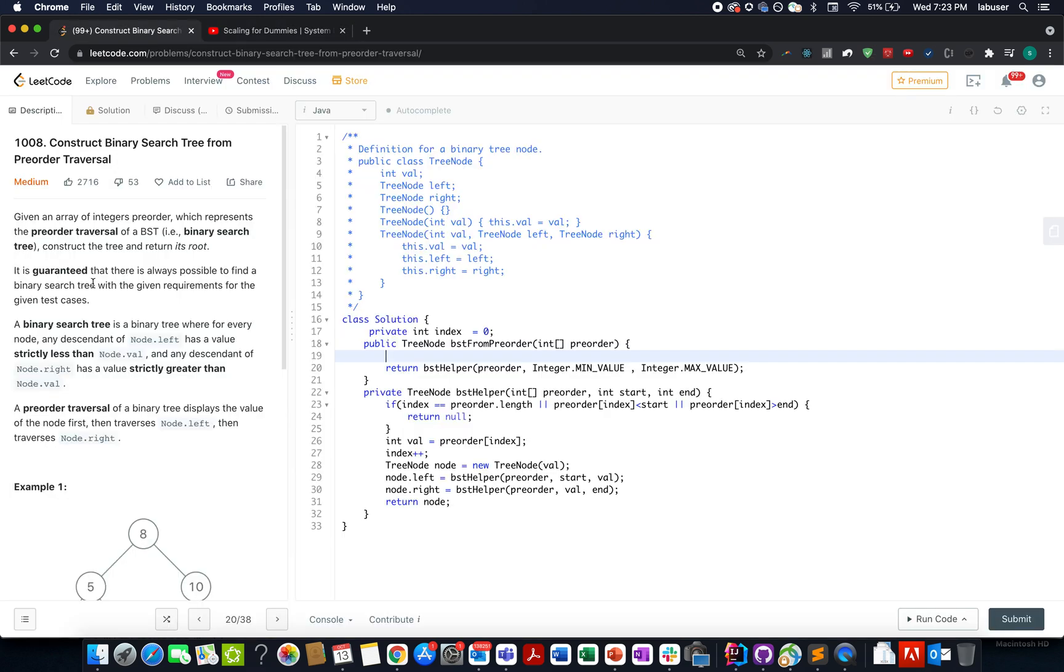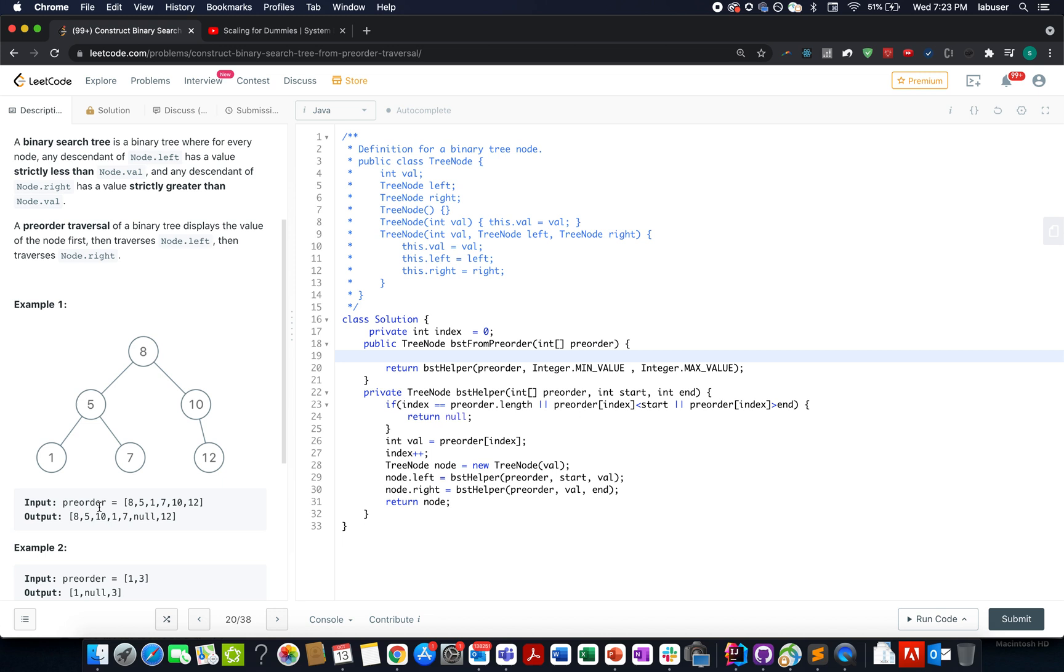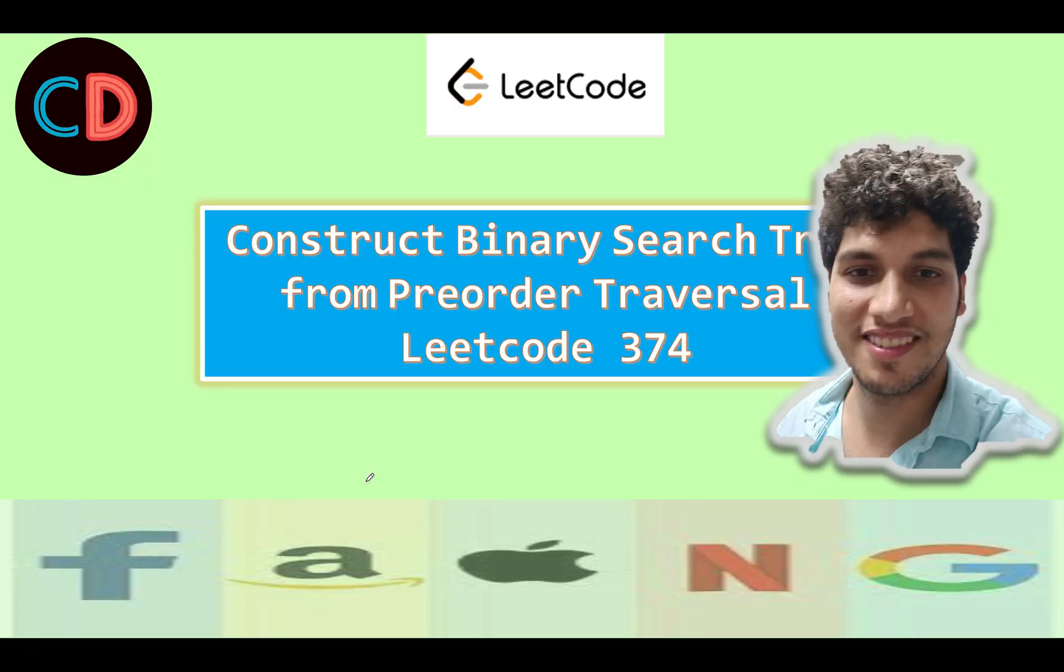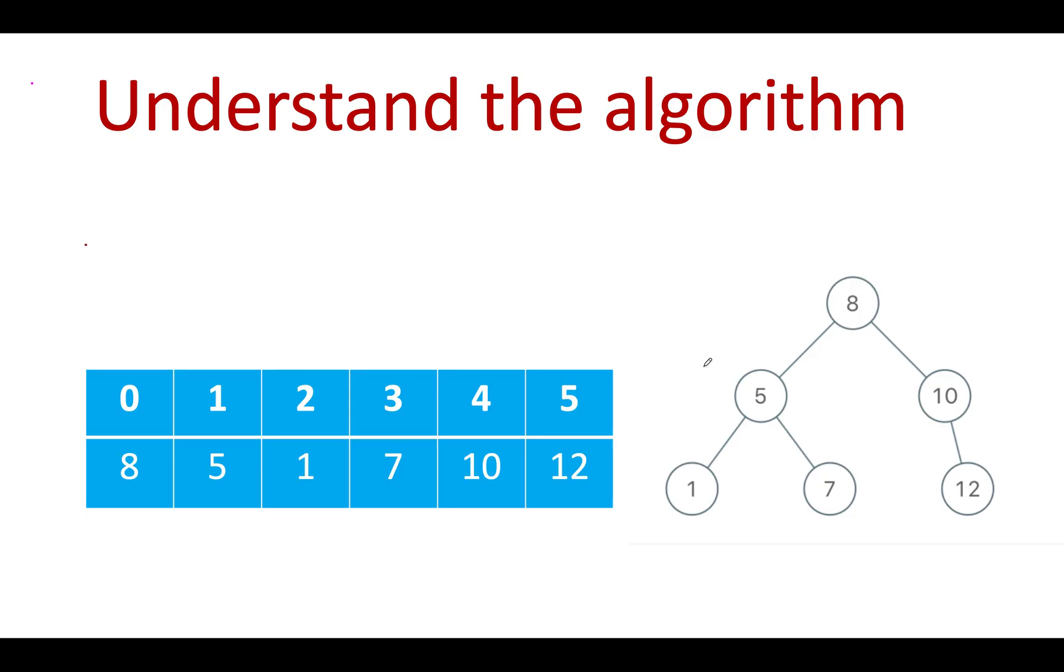Now let's look at today's question. Today's question is construct binary search tree from preorder traversal. We are given an array that states the preorder traversal of a binary search tree. We need to generate the complete tree using this preorder traversal. Let's look at the presentation and get started with the solution.